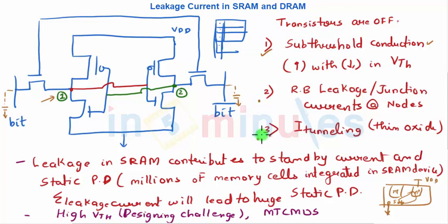This standby current leads to static power dissipation, which we have seen in the previous clip. The static power dissipation is nothing but I_static into VDD, and I_static is the combination of all these three currents. So static power dissipation in one SRAM cell increases, and we have millions of such on one IC.